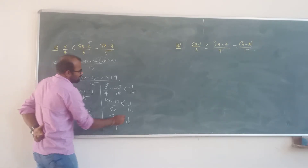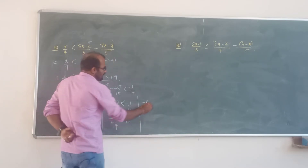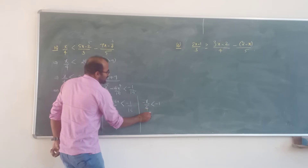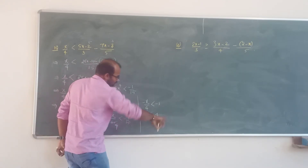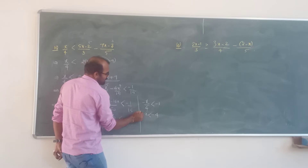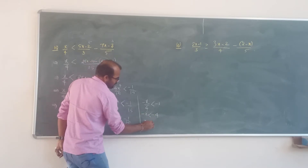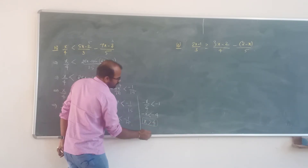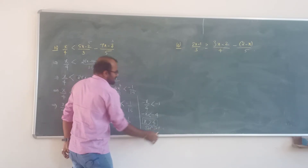x by 4: minus x by 4 less than minus 1. T4 correct. Minus x less than minus 4. But I want this as plus x — multiply with minus 1. Plus x, and this symbol changes. Beta: minus 4 becomes plus 4. So solutions: x is greater than 4.